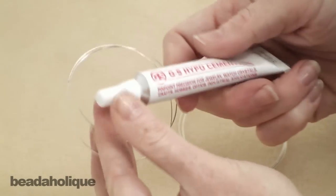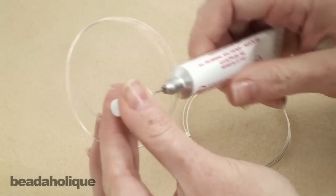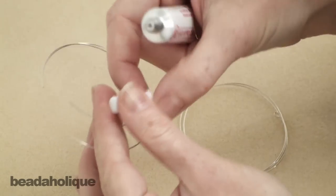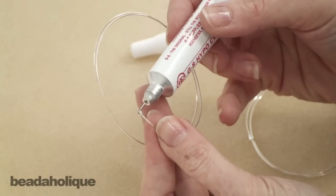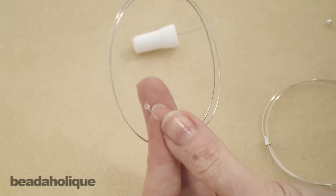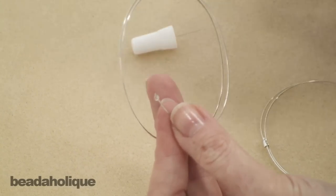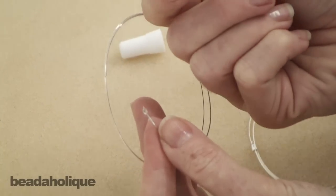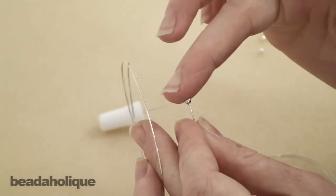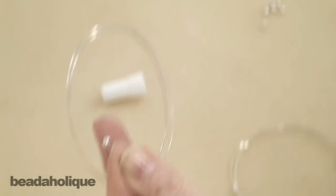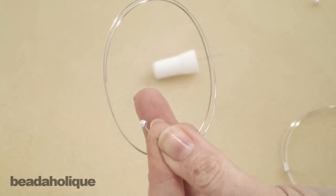And to apply these, you're going to take some GS Hypo cement. We're going to put it on the wire itself. Just going to take one of these little guys, find the hole, and press onto place. And then we're just going to let that dry and it's going to dry and be solid.